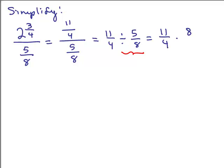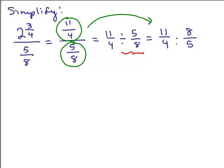So that's really 11/4 times 8/5. You can go directly from the division step to multiplying by the reciprocal — you take the numerator and multiply by the reciprocal of the denominator. Then we simplify and cancel if possible: 4 goes into 8 twice, so the answer is 22/5, and that's fully reduced. You don't need to change it to a mixed number.